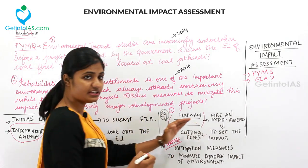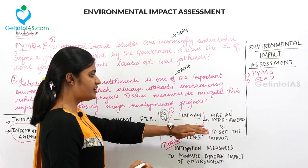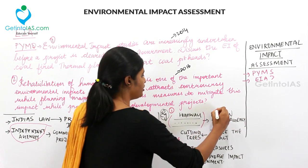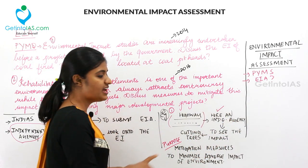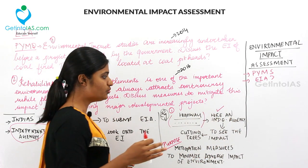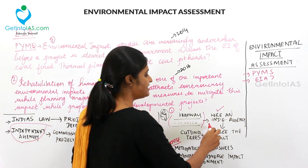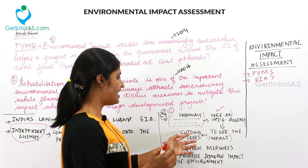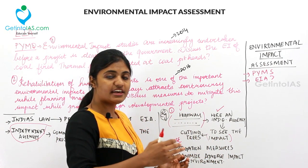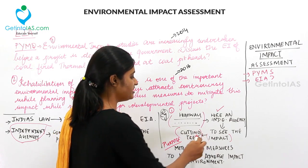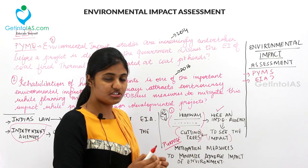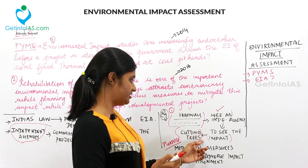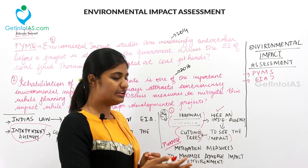For example, if you are building a highway, you should hire an independent agency. That independent agency will see the impacts relating to the environment. What are the impacts of building a highway? The first thing is cutting down of trees — they should assess what impacts will happen if you cut down the trees — and then the report is submitted.